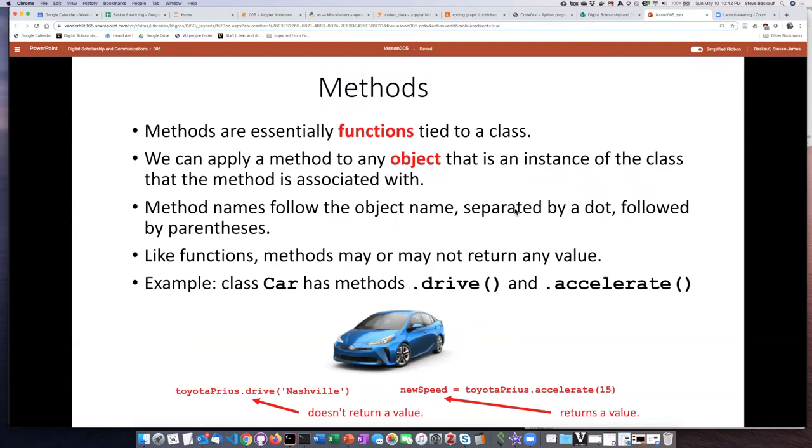The way that we indicate that we're talking about a method is we write the object name, then a dot, and then the method name with parentheses. So it would make sense for a class like car to have methods like drive and accelerate because those are things that you can do to a car. The way we would write this, if the object's name is Toyota Prius, then the drive method we would say Toyota Prius dot drive, and then the argument we could pass in is where we want to drive to. If we use the method accelerate, we could say how many miles per hour we want to accelerate by. And so we would write Toyota Prius dot accelerate with an argument of 15.